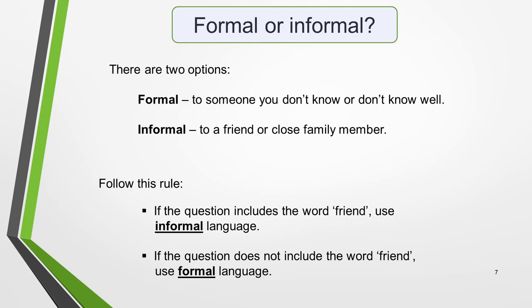IELTS letters must be written in an appropriate tone and style. There are two options: formal, to someone you don't know or don't know well, or informal, to a friend. It's essential that you're able to identify what type of letter you're required to write. Follow this rule: if the question includes the word 'friend', use informal language. But if the question does not include the word 'friend', use formal language. Although it's possible that you could be friendly with this manager, assume you are not and keep this type of letter formal.